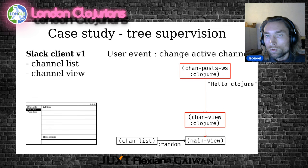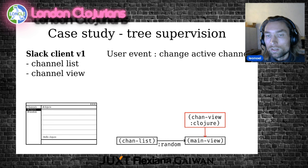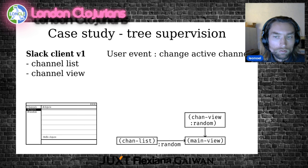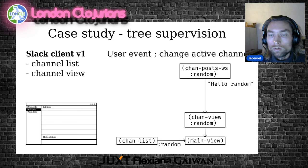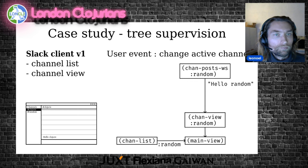We ask the WebSocket channel to dispose. That means we are going to close the connection and garbage collect it. And at this point we can unmount the component. Now we can recreate the new channel view for the random channel, create the WebSocket that connects to the posts of the random channel, and finally render the posts for this channel. So that's tree supervision — the construction of a chain of responsibility where every dependent resource is encapsulated by its parent.